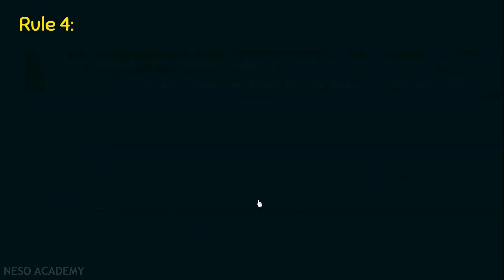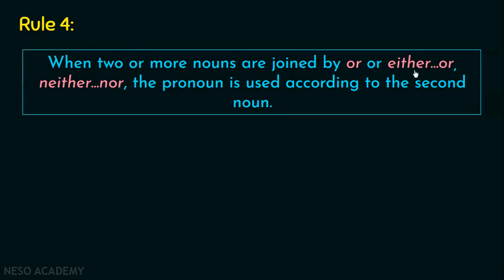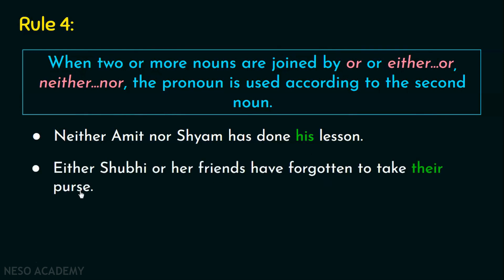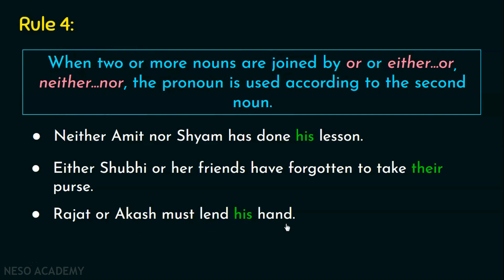The fourth rule says: when two or more nouns are joined by OR, either-OR, or neither-NOR, the pronoun is used according to the second noun. For example, 'Neither Amit nor Shyam has done his lesson' — the second noun is Shyam, which is singular, so the pronoun 'his' is also singular. 'Either Shubhi or her friends have forgotten to take their purse' — the second noun is plural, so the pronoun 'their' is plural. 'Rajat or Akash must lend his hand' — the second noun is singular, so the pronoun is singular. Remember these three conjunctions and their specific rule.